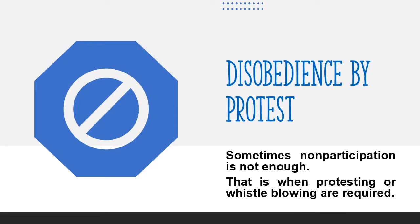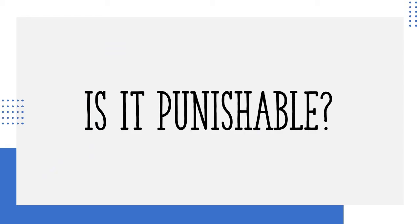Protest is a stage that employees reach when they feel that they have exhausted all possible routes to alleviate the situation. When employees believe that drastic change is required, they publicly announce it by several forms of protest, and sometimes they may go as far as whistleblowing if they deem it necessary. After mentioning all three types of disobedience, one would ask if companies can retaliate against those employees and punish them.